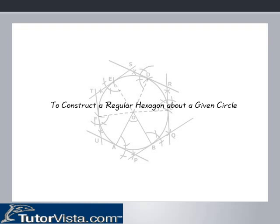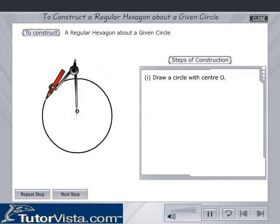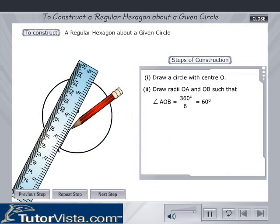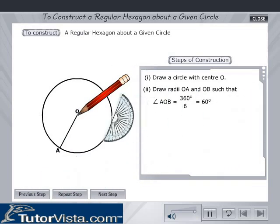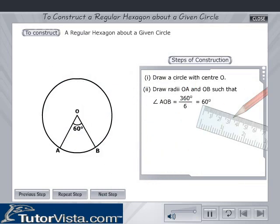To construct a regular hexagon about a given circle. Draw a circle with center O. Draw radii OA and OB such that the angle AOB is equal to 360 degrees divided by 6, i.e. 60 degrees.